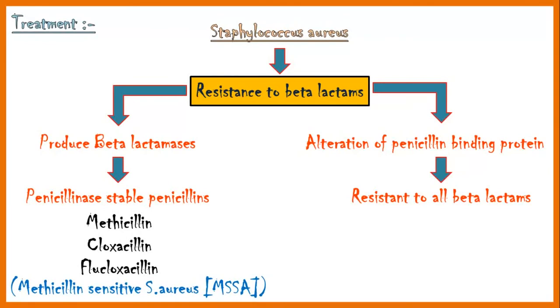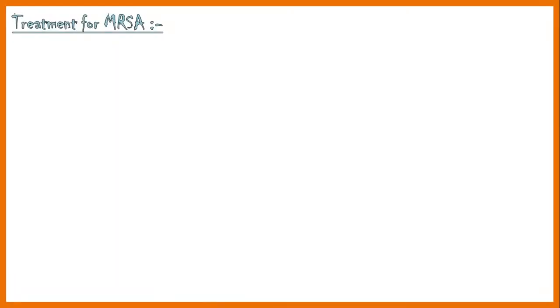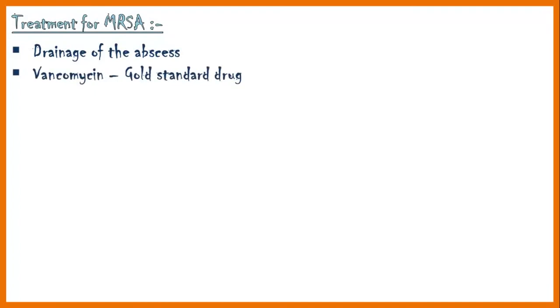Thus, they are called methicillin-resistant Staphylococcus aureus, or MRSA. Treatment of MRSA is an emerging problem in healthcare facilities, because most hospital-acquired staph infections are caused by MRSA strains, and they are highly resistant to many types of antibiotics. If the infection is not serious, drainage of the abscess would be an effective way of treatment. Vancomycin is considered the gold-standard drug to treat MRSA infections; however, its effectiveness is less due to poor tissue penetration and slow bactericidal activity.